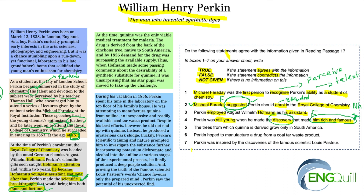Question five: 'The trees from which quinine is derived grow only in South America.' Remember I told you to pay attention to words like most, majority, all, and only — here you find the word 'only.' The keyword 'only' means exclusively. Now I look for quinine and South America in the passage. I find: quinine 'is derived from the bark of a tree native to South America.' I find South America in the passage, and I find information about the tree.